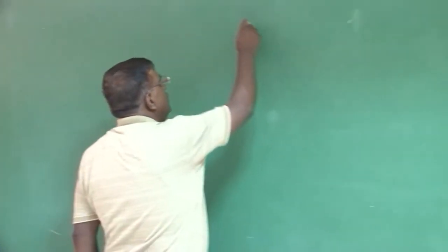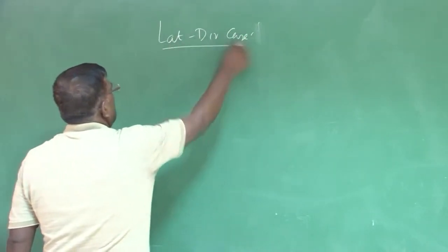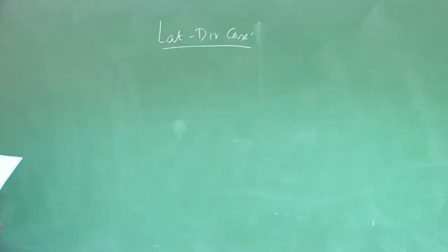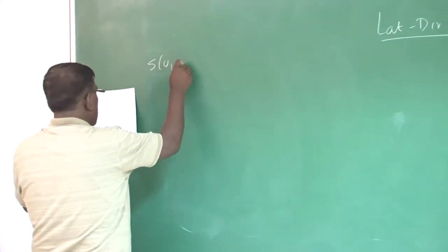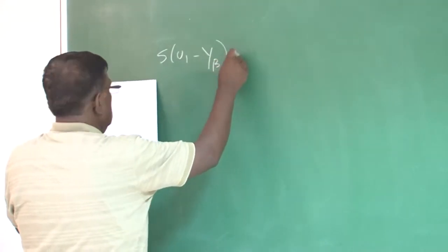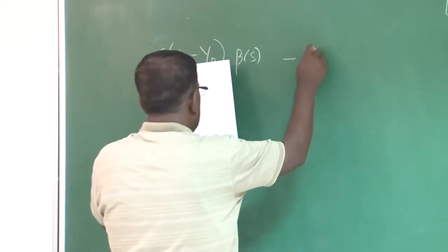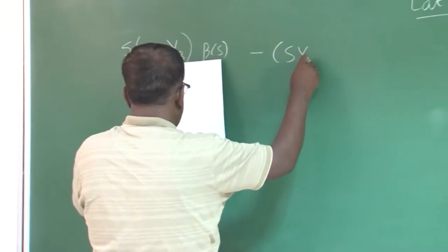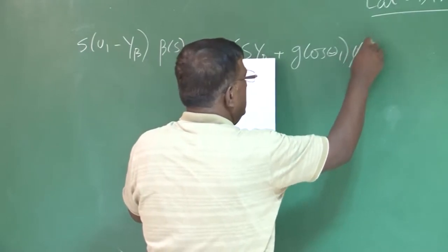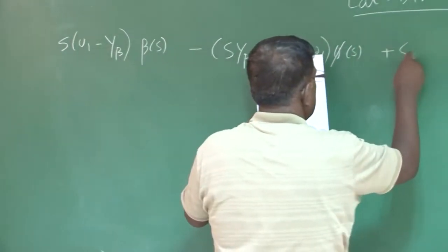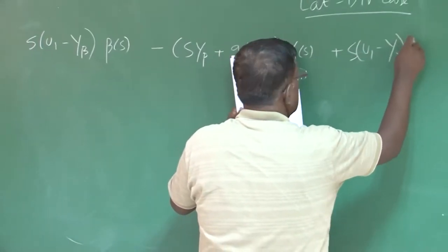If we now talk about mode shift for the lateral directional case, the approach is the same. Here, you have to use the stability equation. Let me write this: y_beta into beta(s) minus s·y_p plus g·cos(theta_1) into phi(s) plus s·u_1 minus y_r into psi(s).